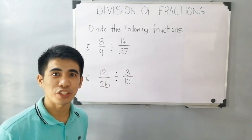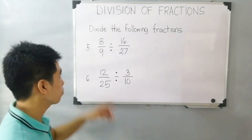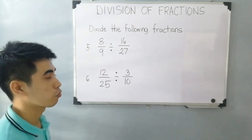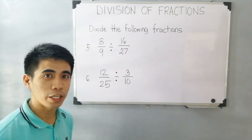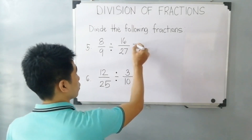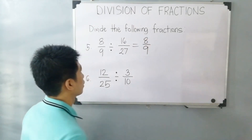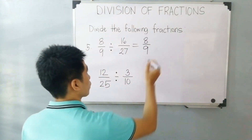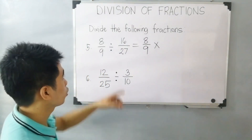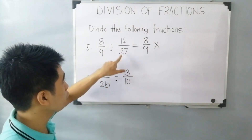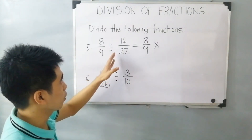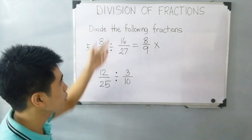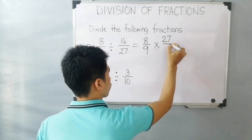For you to have mastery in dividing fractions, let us have 2 additional examples — example number 5 and example number 6. For example number 5: 8 over 9 divided by 16 over 27. We have 3 steps. The first one: keep or rewrite the first fraction, which is 8 over 9. Next, change the operation into multiplication. And the next step is to flip or get the reciprocal of 16 over 27 — so 16 will become the denominator and 27 will become the numerator: that is 27 over 16.